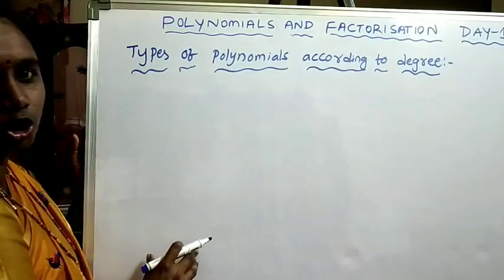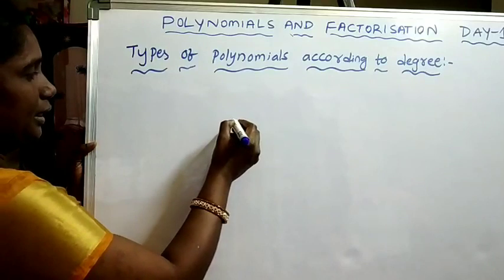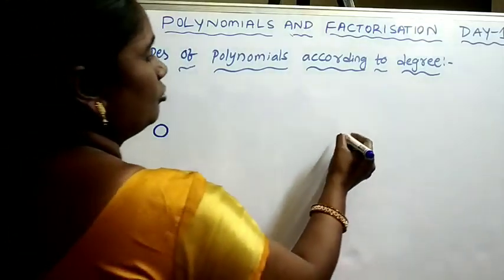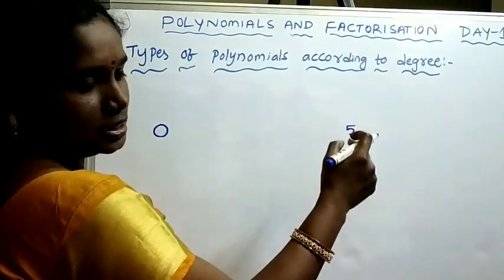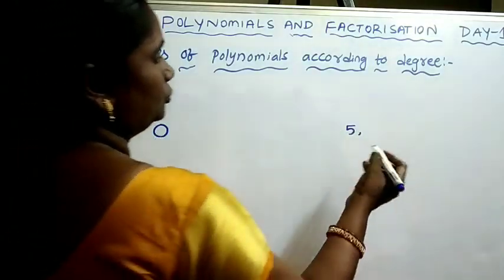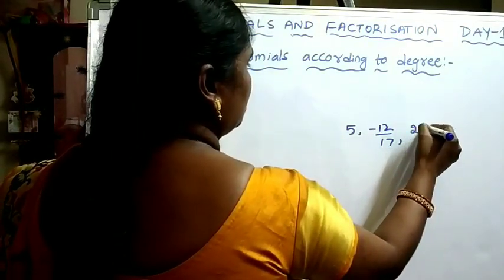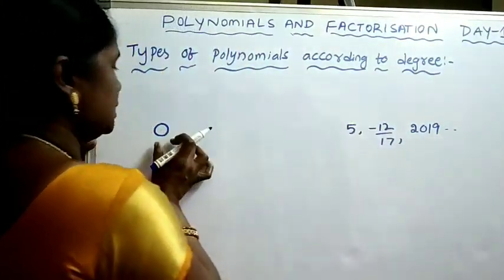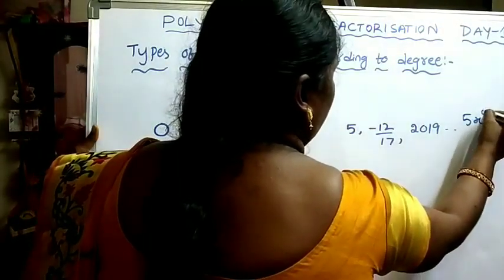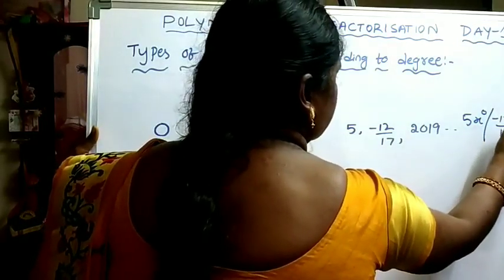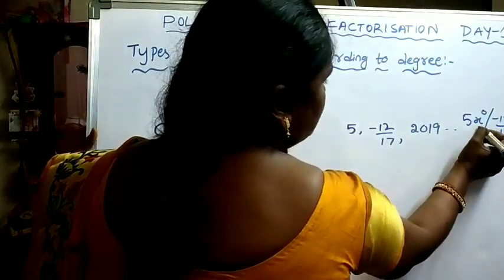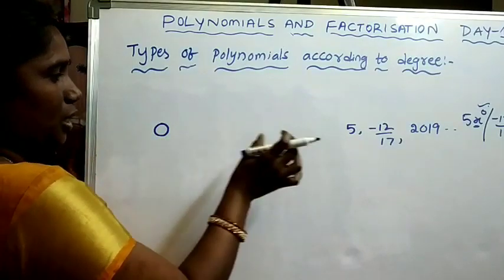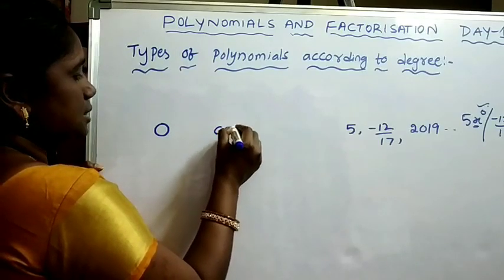Now, types of polynomials according to degree. If the degree is 0, we remember that constants like 5, −12/17, 2019 can be written as 5·x⁰, (−12/17)·x⁰, etc. So the power of the variable is 0, and therefore these are polynomials of degree 0. If the degree of a polynomial is 0, it is called a constant polynomial.